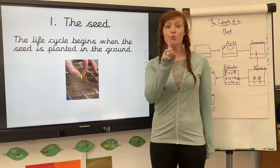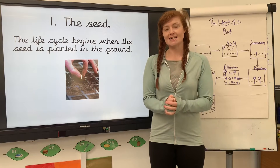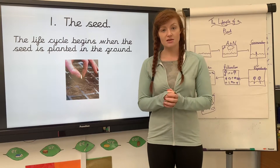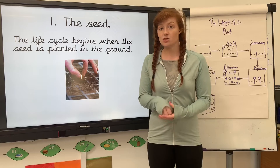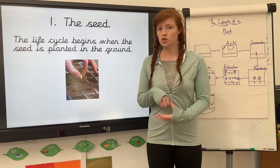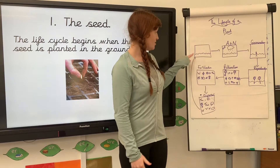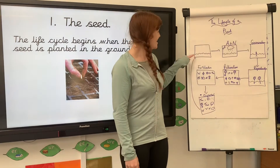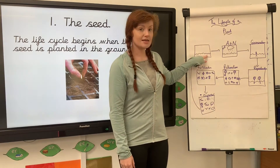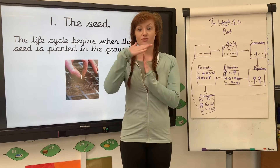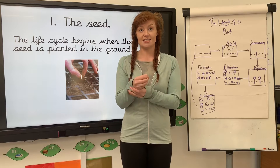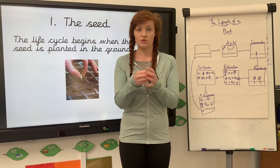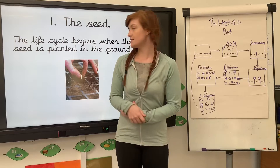So, number one, it starts with the seed. The life cycle of a flowering plant always starts with a seed being planted in the ground, so under the mud. You can see here I've done a little picture of some mud in purple and some seeds being planted. So number one starts with the seed — we plant it in the ground.